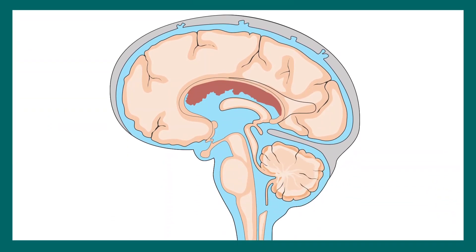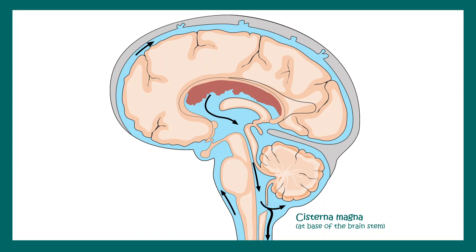In hydrocephalus, the balance between cerebrospinal fluid production and reabsorption is altered. CSF is generated by the choroid plexus, then passes through the ventricles and moves out via the cisterna magna, circulates around the brain, and is ultimately reabsorbed by the arachnoid granulation. If this reabsorption process is hampered, excess CSF accumulates — overall, this is a drainage problem.